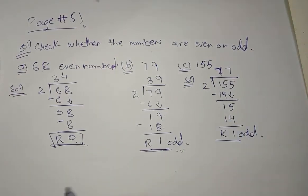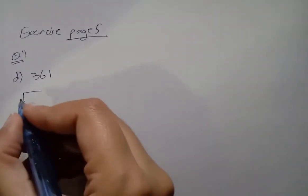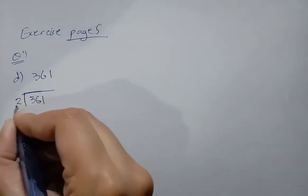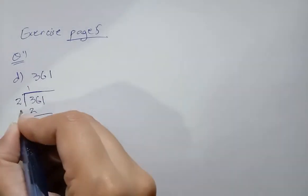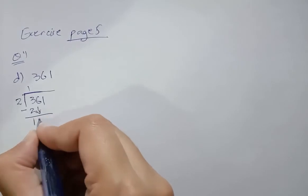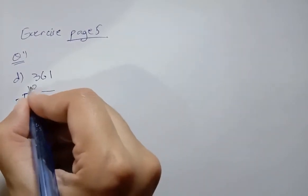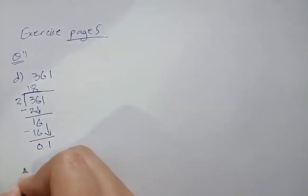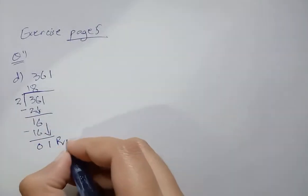Now move towards part d. Our question is 361, divided by 2. Two ones are two — subtract, the remainder is 1. Bring down 6. Two eights are sixteen — subtract, the answer is 0. Bring down 1. The remainder is 1, so 361 is an odd number.